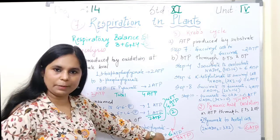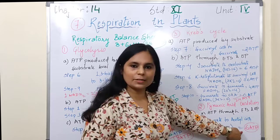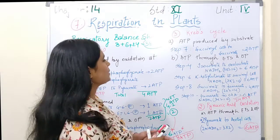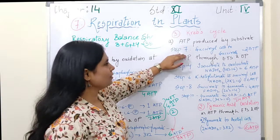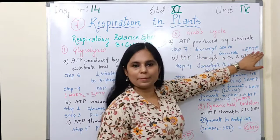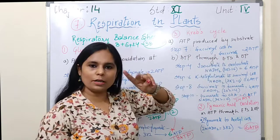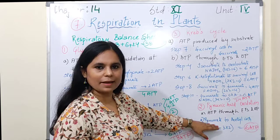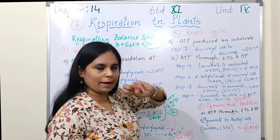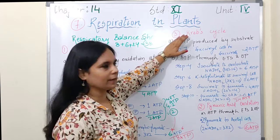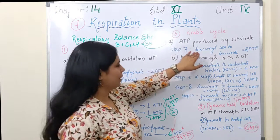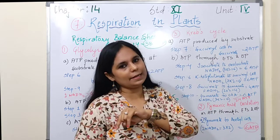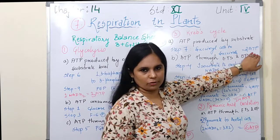Glycolysis mein hamein 8 ATP mila aur pyruvate acid oxidation se 6 ATP mila. Now let's move on to the Krebs cycle. Krebs cycle ke case mein, 7th step pe direct ATP milta hai. Hum 2 Krebs cycles ko consider kar rahe hain ek saath, kyunki 2 molecules bane the pyruvate ke. 2 Krebs cycles mein jab succinyl-CoA se succinate banta hai, us samay GTP se ATP banta hai — that is 2 molecules of ATP.